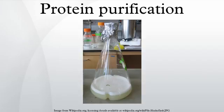The first proteins to be purified are water-soluble proteins. Purification of integral membrane proteins requires disruption of the cell membrane in order to isolate any one particular protein from others in the same membrane compartment. Sometimes a particular membrane fraction can be isolated first, such as isolating mitochondria from cells before purifying a protein located in a mitochondrial membrane. A detergent such as sodium dodecyl sulfate can be used to dissolve cell membranes and keep membrane proteins in solution during purification. However, because SDS causes denaturation, milder detergents such as Triton X-100 or CHAPS can be used to retain the protein's native conformation during complete purification.